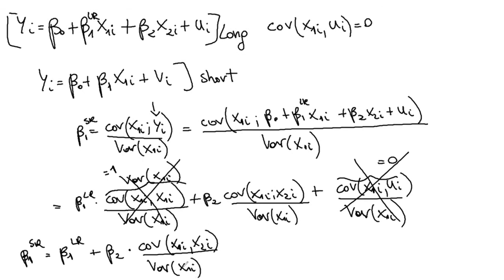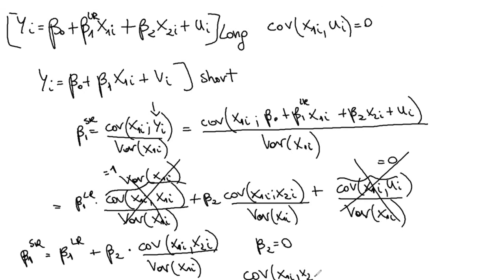So beta 1 from the short regression boils down to: beta 1 long + beta 2 × (covariance between x1 and x2 / variance of x1). This is the formula for the relationship between the short and long regressions. Ideally we'd want beta 1 short to equal beta 1 long, meaning it's okay to omit x2. For that, the second term must equal 0, which requires either beta 2 = 0 or the covariance between x1 and x2 = 0.